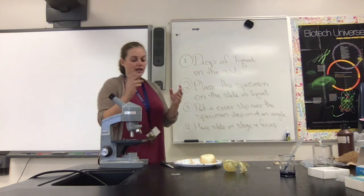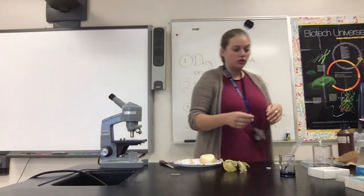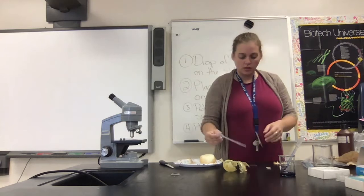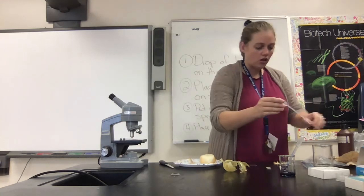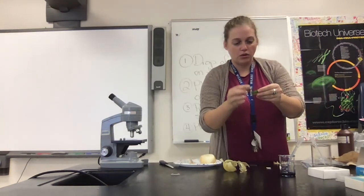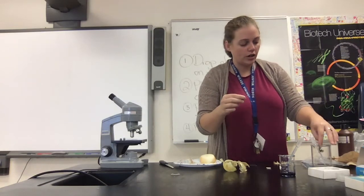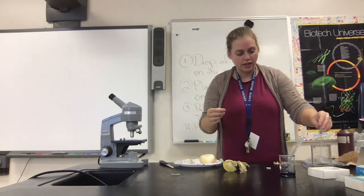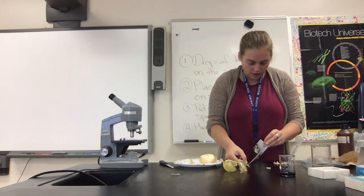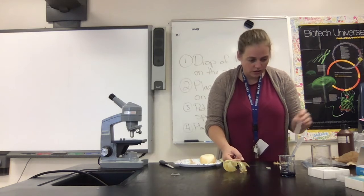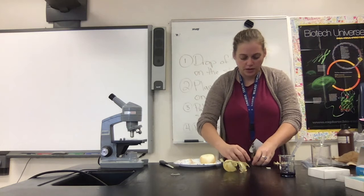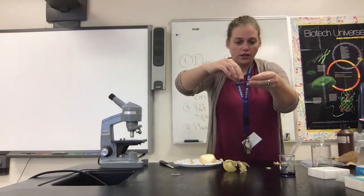So you saw me make an onion slide — that's the first kind of cell we're going to look at. We're also going to be looking at a green plant. I'm going to make a wet mount slide by dropping a single drop of liquid on the slide. We are using Elodea because it's only two cell layers thick, making it really easy to get a good picture on the microscope. So we put the Elodea leaf in the slide and place a cover slip over it at an angle to squeeze out all of the air bubbles.